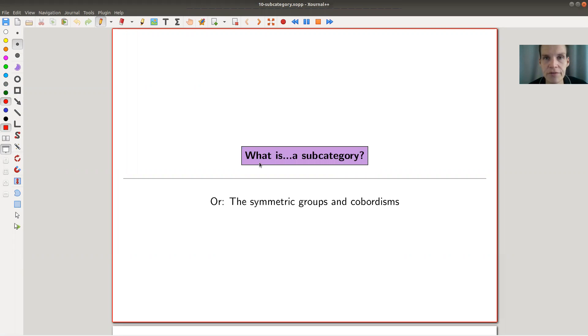Okay, welcome everyone to my continuation of what is category theory. Today I would like to talk about subcategories or substructures. As we will see, symmetric groups and cobordisms is a really nice example of a subcategory. So what is a subcategory? Well, you will see the abstract definition, but you should just think about it as follows.